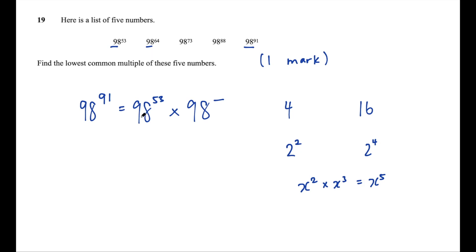So, in this case, 98 to the power of 53 times 98 to the power of 91 take 53, 38. That would be 98 to the power of 91.